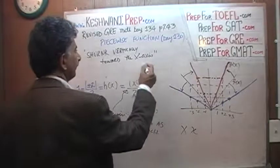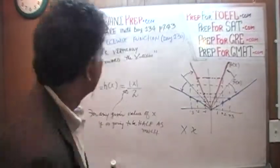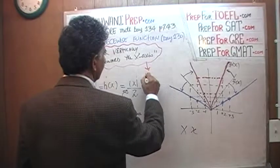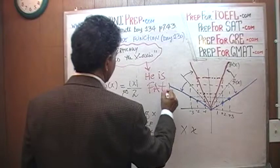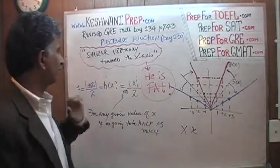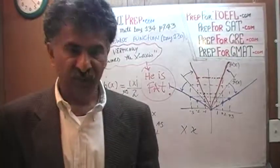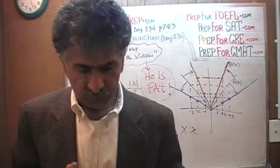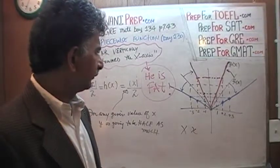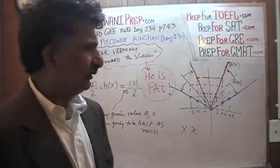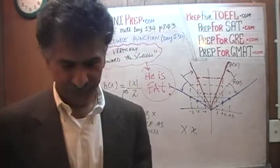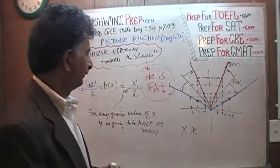So let's put down the translation: 'shrunk vertically towards the x-axis' means he's fat. But they don't want to call the graph fat, so they put it euphemistically — he's not fat, he's just shrunk vertically towards the x-axis. That's what I like to say when I meet somebody: in polite company you don't ask 'have you gained weight?' Instead you ask: 'Have you shrunk vertically towards the x-axis lately?'